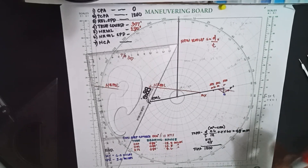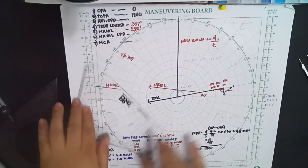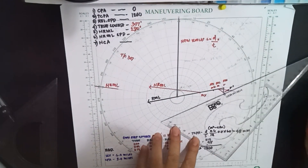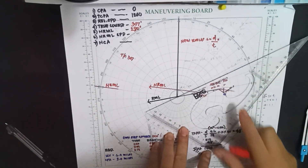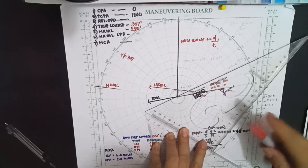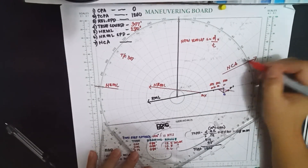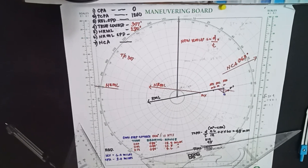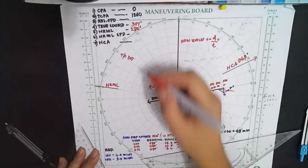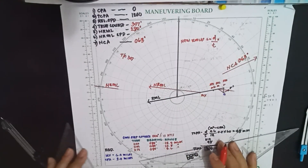So E to R-prime — this will be your true motion, or the course to alter. Let's bring this to the center. You will now have the new course to alter of 063 degrees. The new course to alter is 063 degrees.